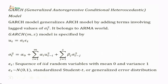We now consider Generalized Autoregressive Conditional Heteroskedastic, or GARCH, models. GARCH generalizes ARCH by adding terms involving lagged values of σ²_t, making it analogous to the ARMA world. The GARCH(m,s) model is specified as u_t = σ_t ε_t, where σ²_t = α₀ + Σᵢ₌₁ᵐ αᵢ u²_{t-i} + Σⱼ₌₁ˢ βⱼ σ²_{t-j}.